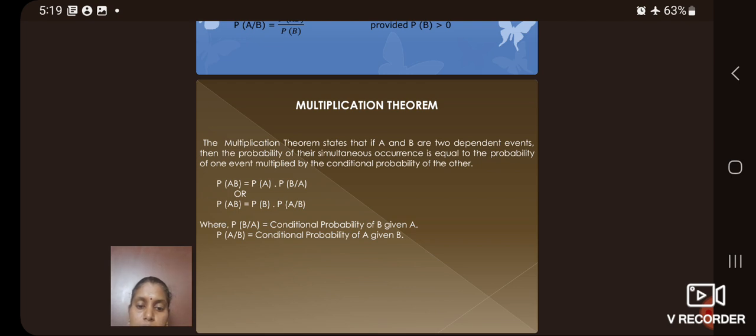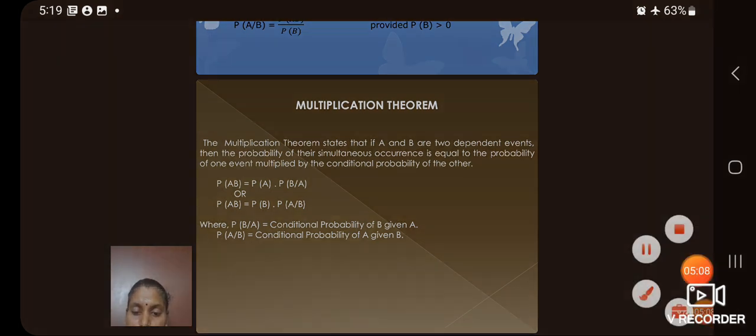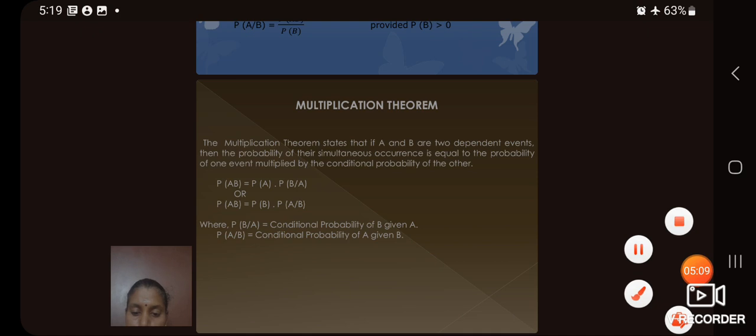Now, let us see the multiplication theorem. The multiplication theorem states that if A and B are two independent events, then the probability of their simultaneous occurrence is equal to the probability of one event multiplied by the conditional probability of the other. That is P of A, B equal to P of A into P of B given A or P of B into P of A given B.